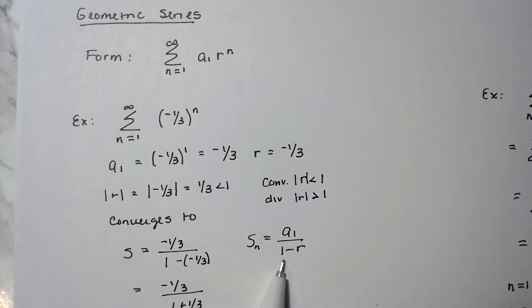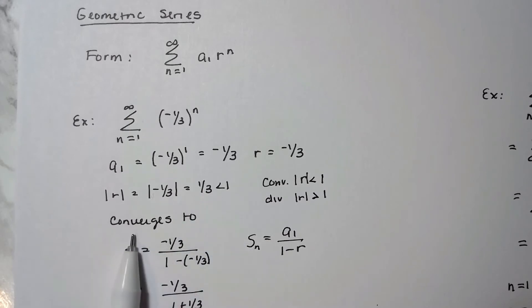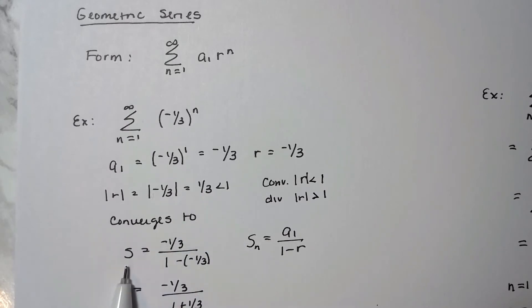If it converges, you have to show what it converges to, and you use this summation formula here. S sub n for an infinite series is the first term divided by 1 minus r. So in this case, I took the absolute value of r to show that it's definitely less than 1.